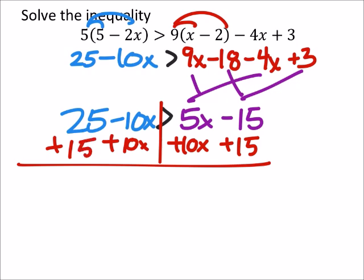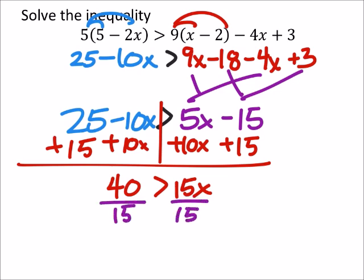So what do I get here? I've got 15x, and my inequality doesn't change. I've got 40 here, and when I divide both sides by 15, I get x. And in comparison, it looks like that's going to be 8 thirds. So 8 thirds is greater than x.